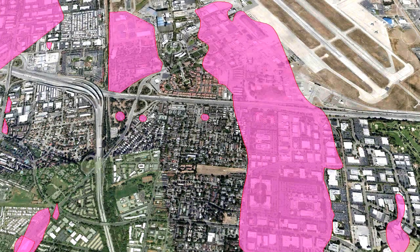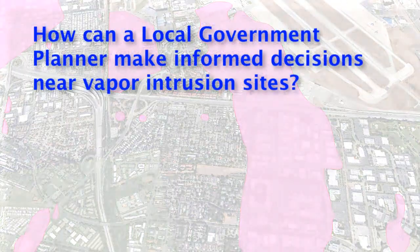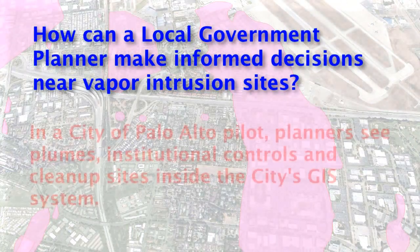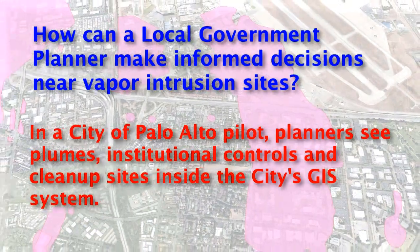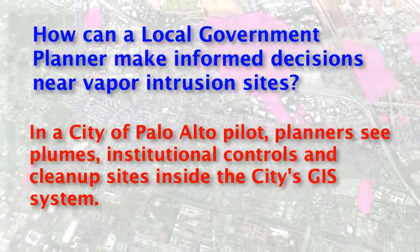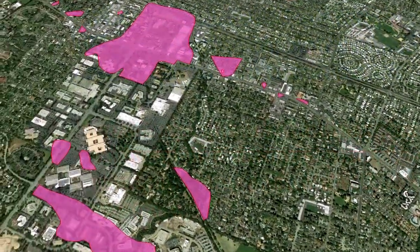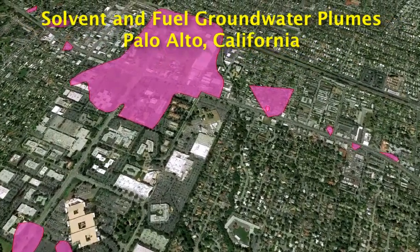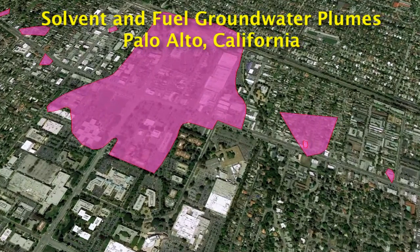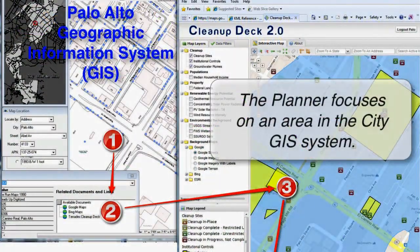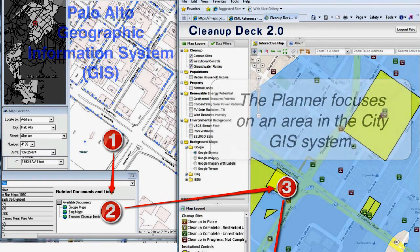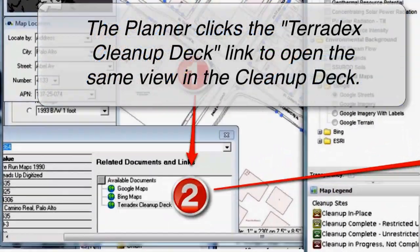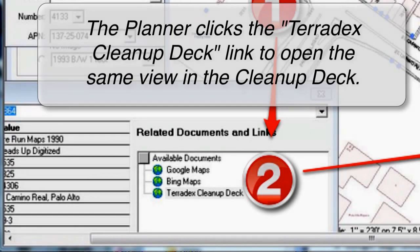Another aspect of stewardship is considering the role of local government — specifically, how can a local government planner make decisions at sites like this? Here we go to Palo Alto to show a pilot with the city of Palo Alto, where we share the same information for a city planner. We look at the TCE and fuel plumes in Palo Alto through a flow from the city's GIS system to the Teradex information in the cleanup deck.